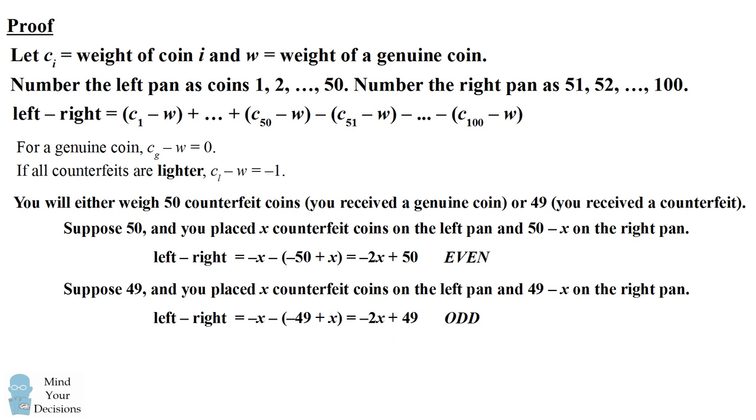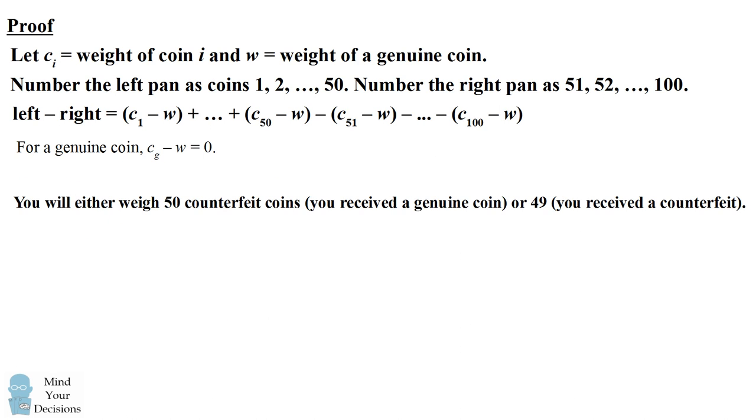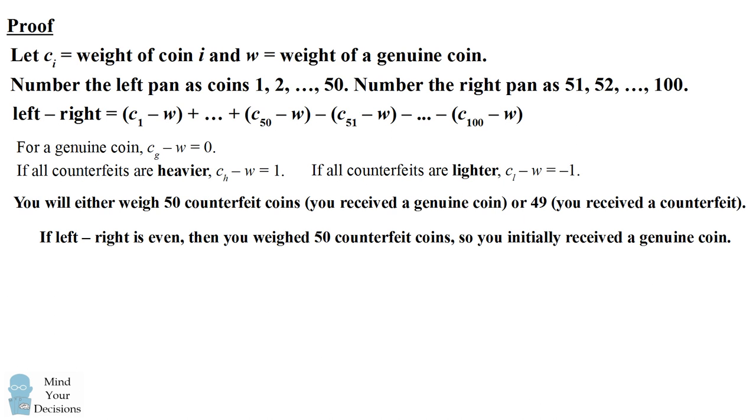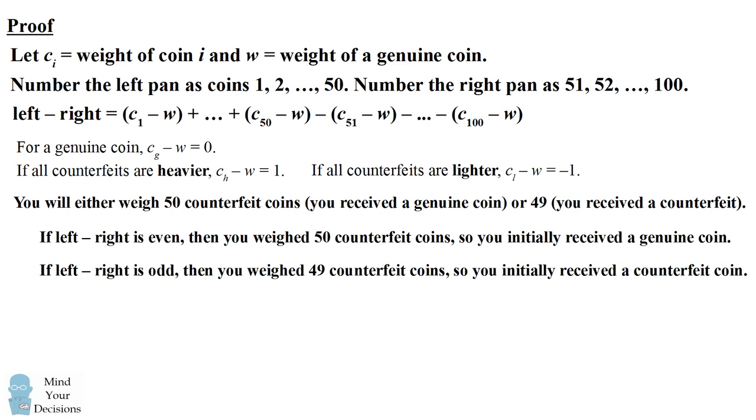So we can generalize all of these cases together, whether we're dealing with heavier or lighter counterfeit coins. If we end up with the balance showing an even integer, then that means we would have weighed all 50 of the counterfeit coins. So that means initially we would have received one of the genuine coins. If instead the balance is showing an odd number, that means we would have been weighing 49 of the counterfeit coins. So initially we would have received one of those counterfeit coins.